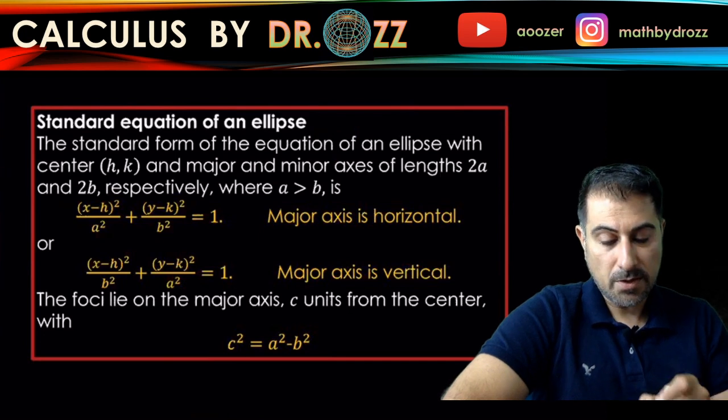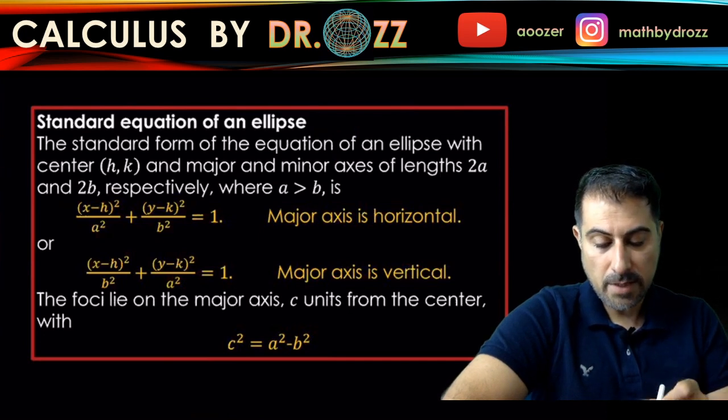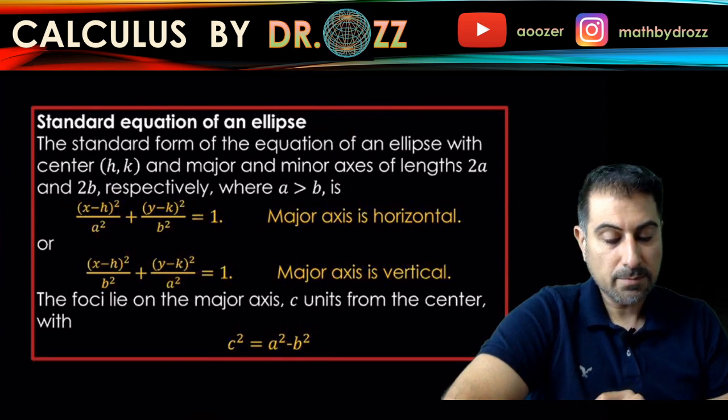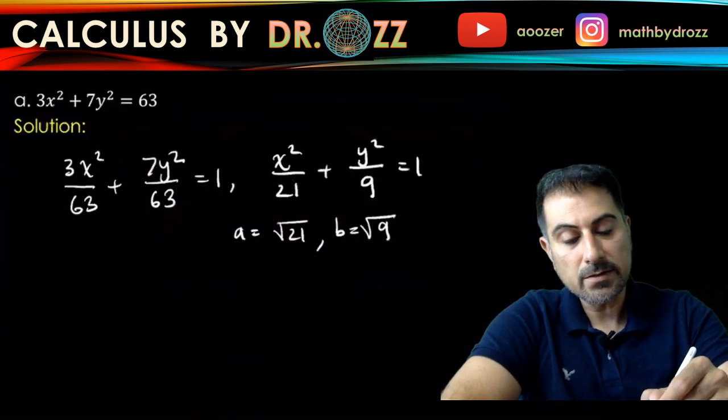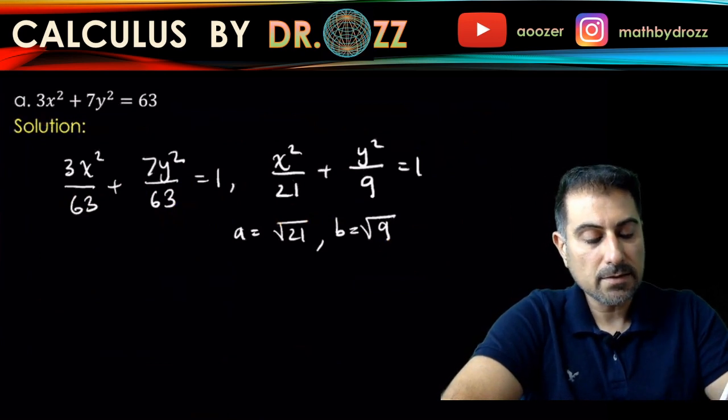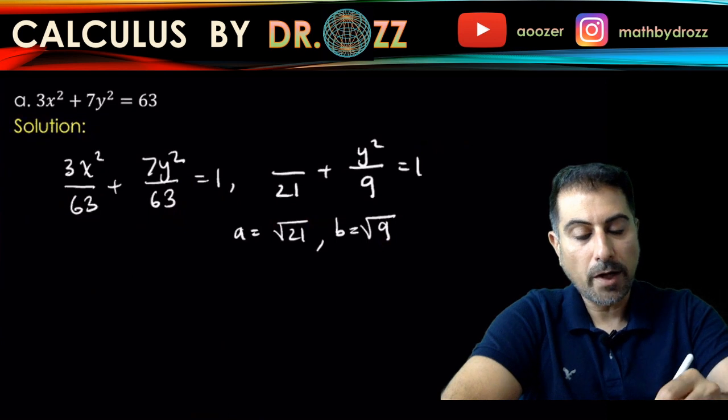I have the major axis to be horizontal for this question. Okay, so because A is greater than B, I have X minus H squared over A squared. Here we go. So X minus H squared over A squared. In fact, I can rewrite this top as X minus 0 squared and